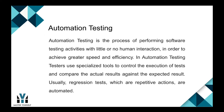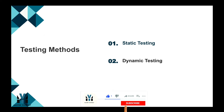Automation testing is the process of performing software testing activities with little or no human interaction, in order to achieve greater speed and efficiency. In automation testing, testers use specialized tools to control the execution of tests and compare the actual results against the expected results. Usually, regression tests — which are repetitive actions — are automated.